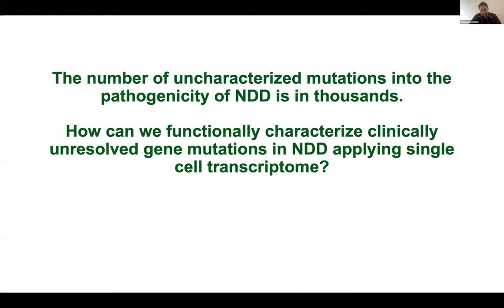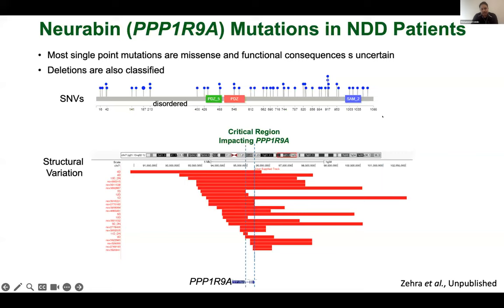Now I want to move to a more clinical paradigm. In clinical molecular diagnosis using genomic sequencing or microarray, many variants remain uncharacterized. How can we leverage single-cell transcriptome data to characterize those mutations and find causation for neurodevelopmental disorders? This is a gene called neurobin, gene symbol PPP1R9A, which has been implicated in neurodevelopmental disorders.